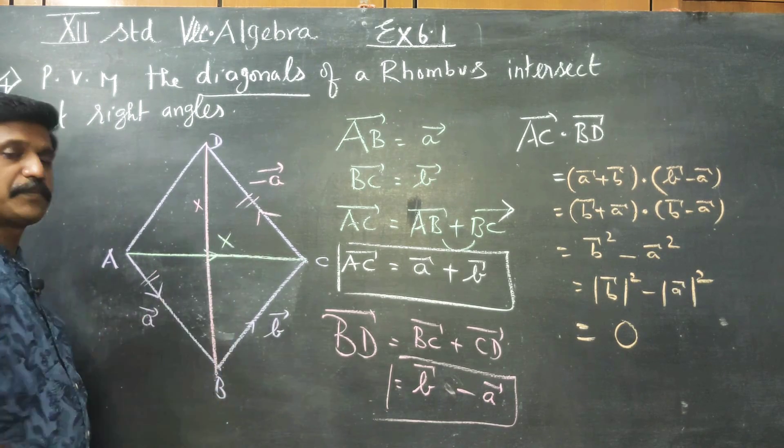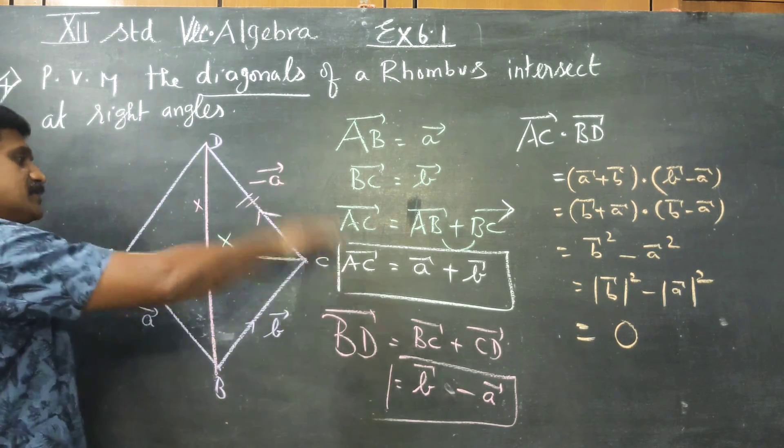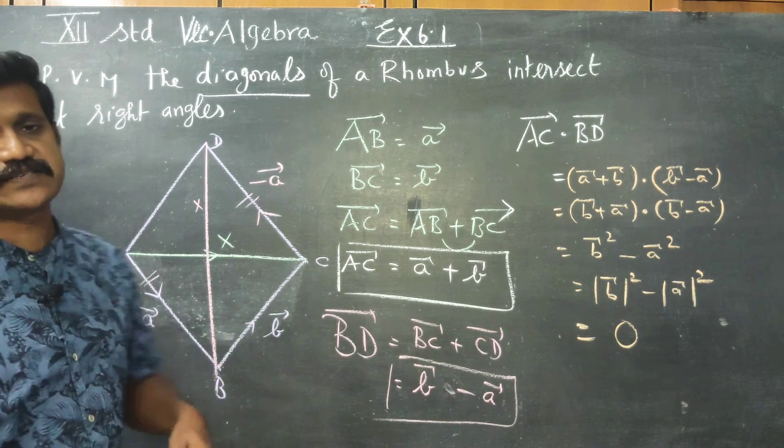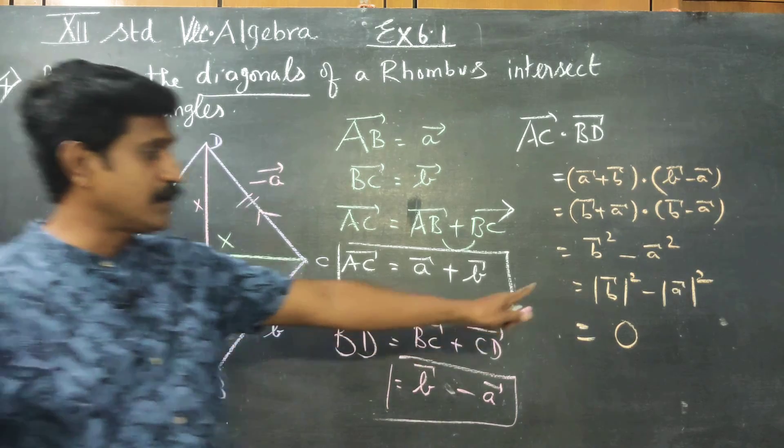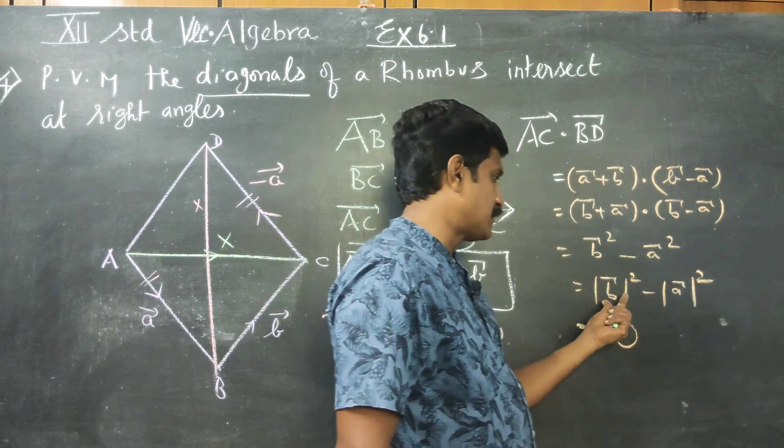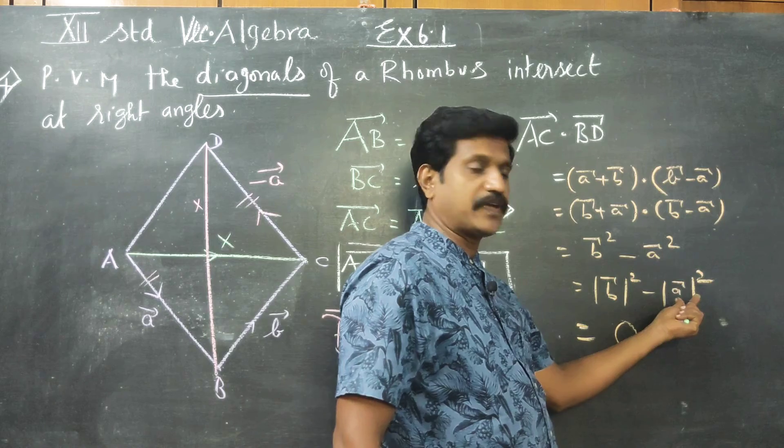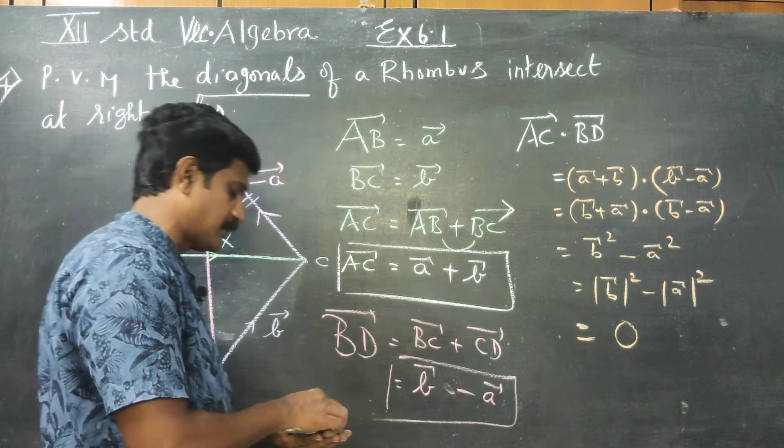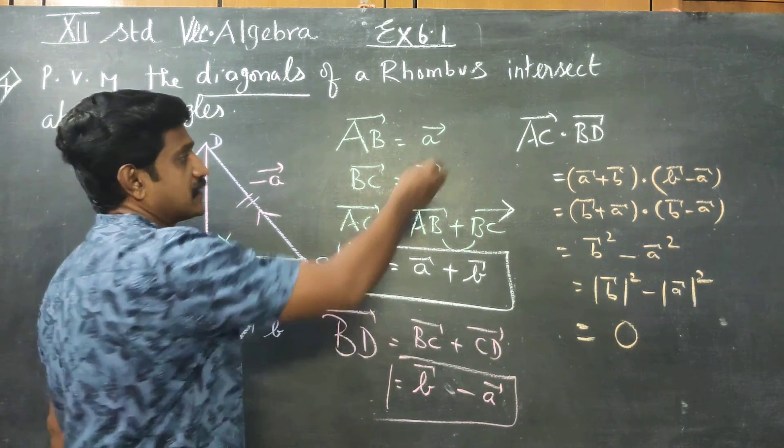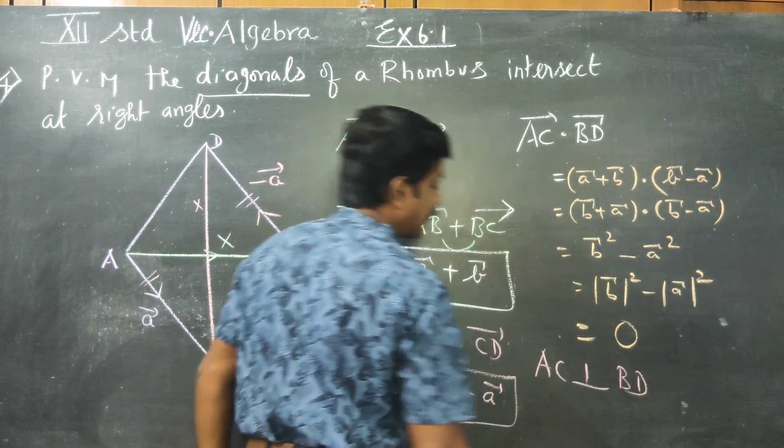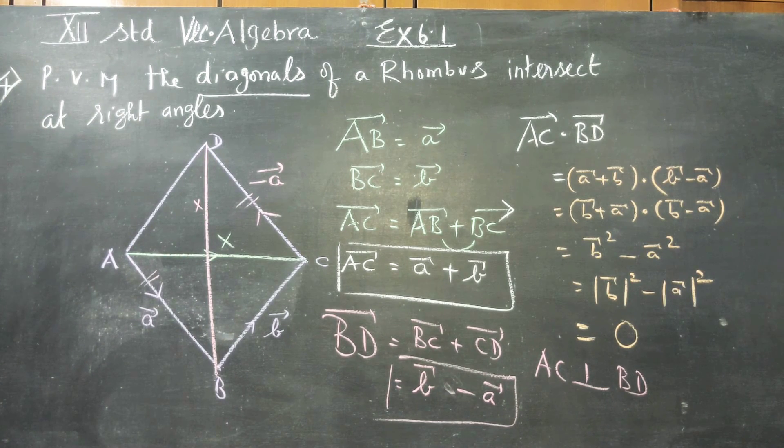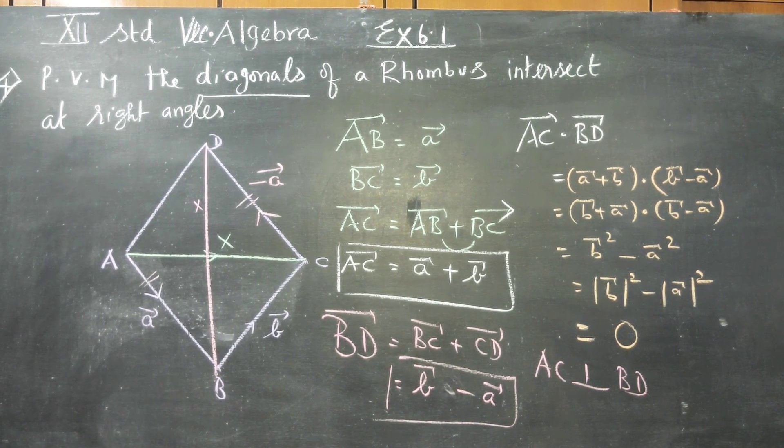B vector magnitude and a vector magnitude measurements are equal. Rhombus all sides are equal. Answer is 0. AC is perpendicular to BD. The diagonal AC is perpendicular to the diagonal BD. Therefore diagonals of rhombus intersect at right angles. Proved. Thank you.